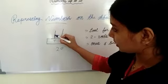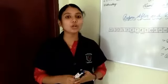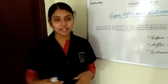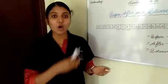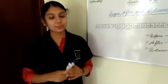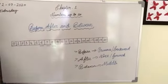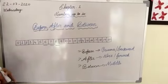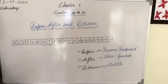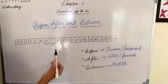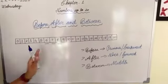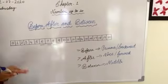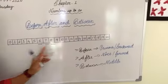Now we move on to the next topic: before, after, and between. Before means previous or backward. After means forward. Between means middle. So take the number 7 from the number strip. Which number comes before 7? Yes, that is 6. Which number comes after 7? That is 8. So 6 comes before 7, and 8 comes after 7, and 7 comes between 6 and 8.